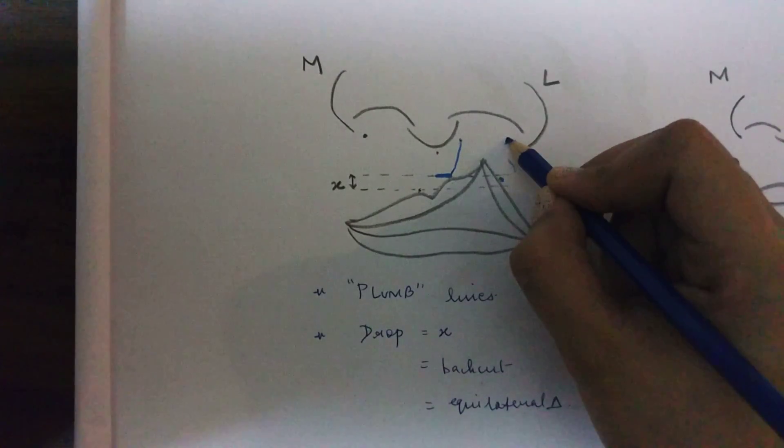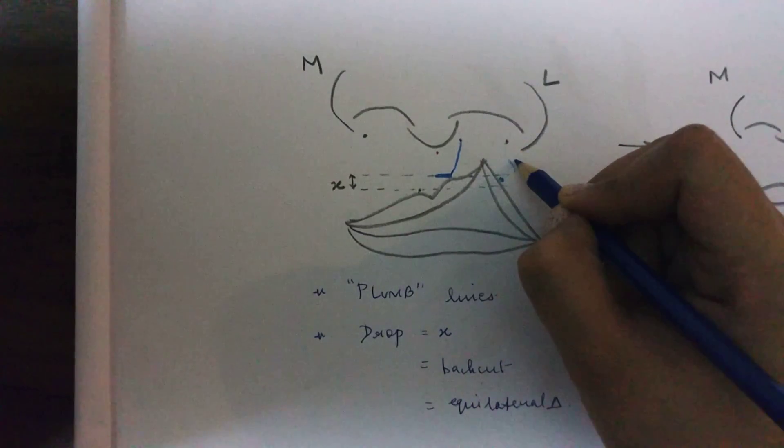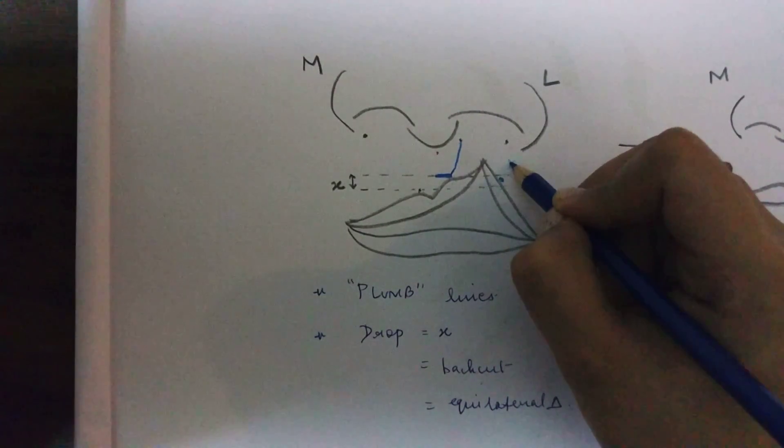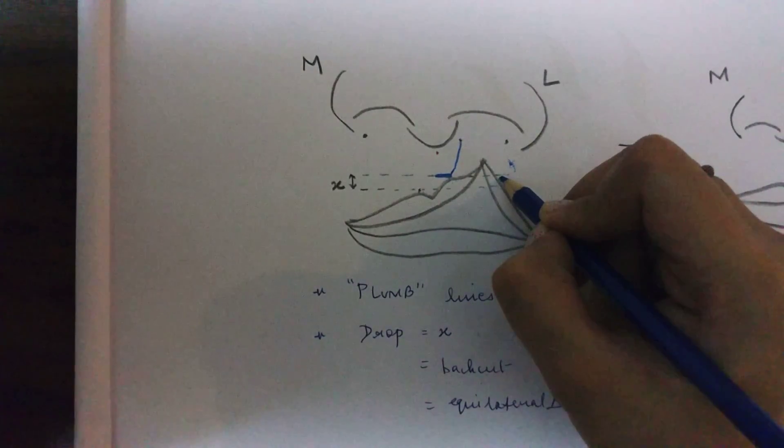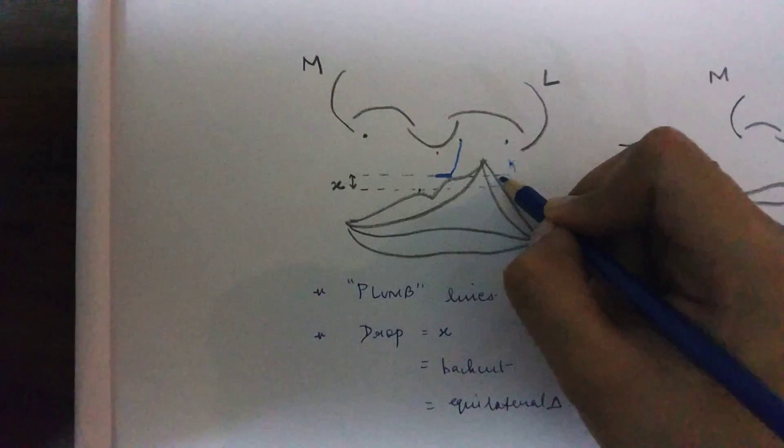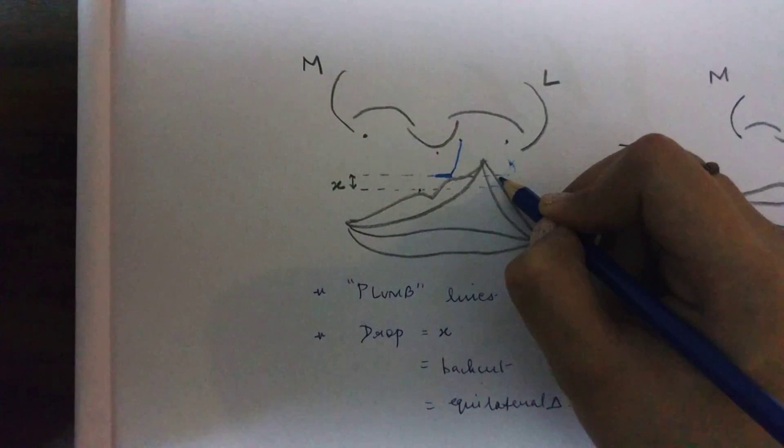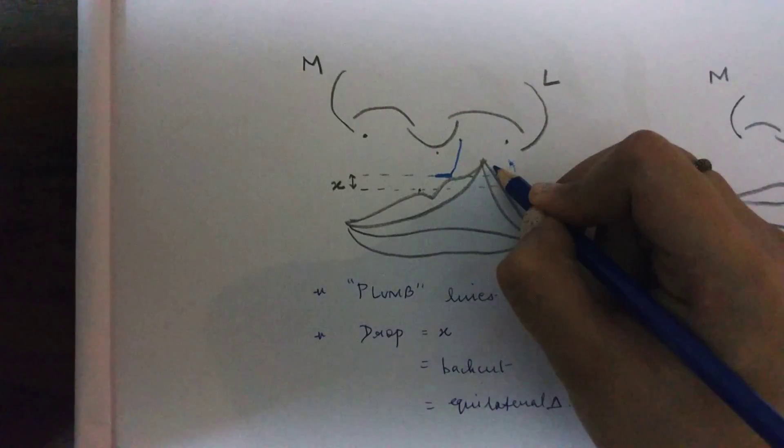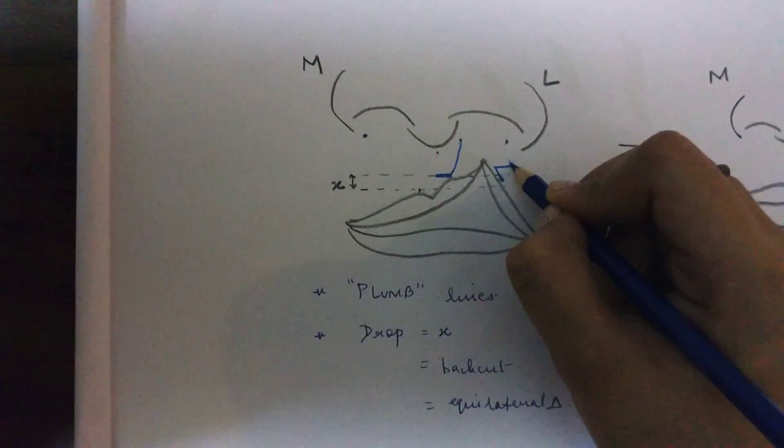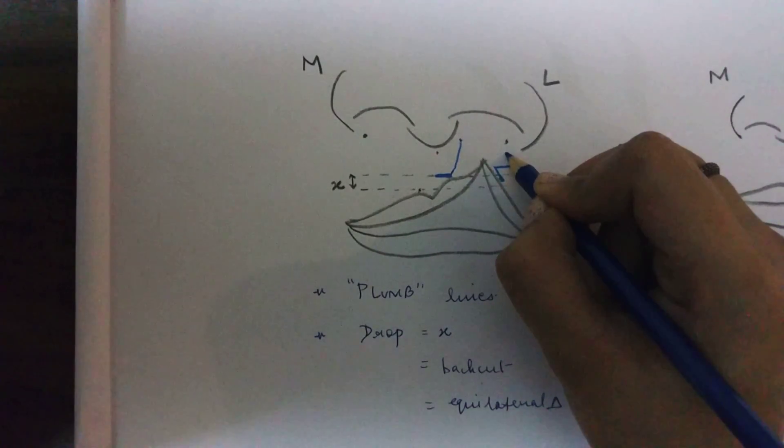Similarly, from the ella base, we will cut an imaginary arc, which is also equal to x. Now where these two points meet is going to be one point of the equilateral triangle. The equilateral triangle that is made on the cleft side is also equal to the measurement of x. So the triangle that will be made on this side will be of this nature. This is an equilateral triangle and it will extend up to the LR base, which is on the cleft side.